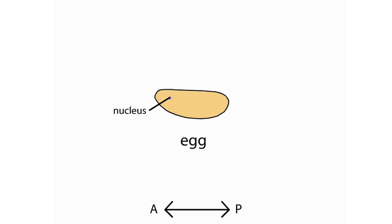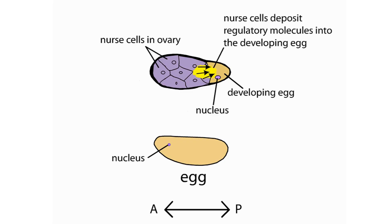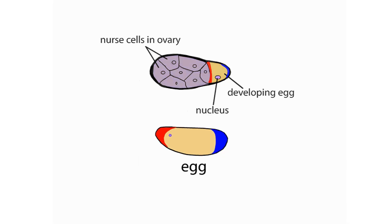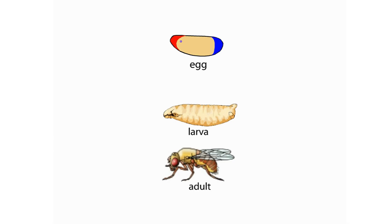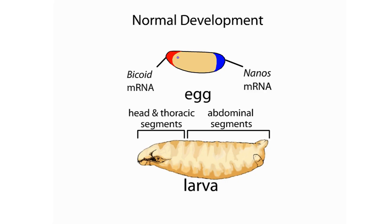Before the egg of a fruit fly has even been fertilized, the egg's anterior and posterior ends can already be distinguished. During egg development, nurse cells in the mother's ovary deposit regulatory molecules into the egg. These molecules define the AP axis of the egg and determine the direction of fly development. Among other regulatory molecules, the mother's nurse cells deposit two types of mRNA called bicoid and nanos into the egg. The bicoid mRNA localizes to the egg's anterior end and the nanos mRNA localizes to the egg's posterior end. The bicoid and nanos mRNAs are essential for normal head, thorax, and abdominal development.